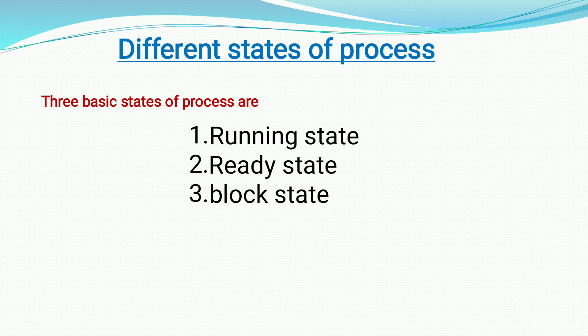The process management has a process ID for each process. There will be different states of a process. The process control block gives information about the process — for example, which process will be in the block state, which process in the running state, which process in the ready state. The process-related information will be stored inside the process control block.